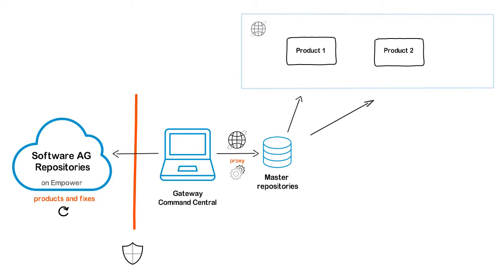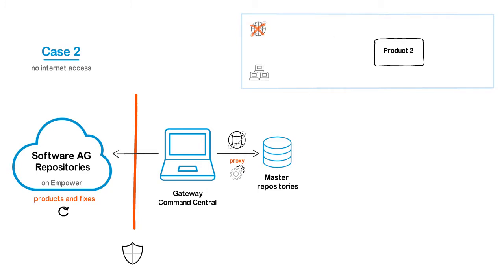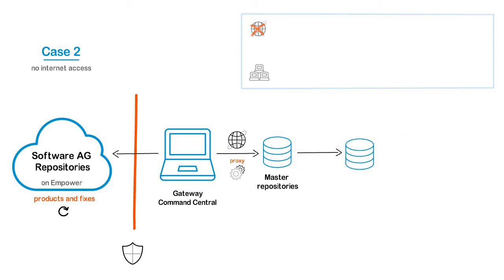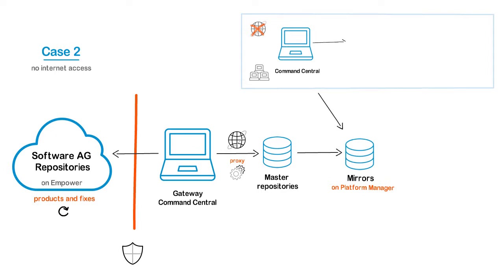Now let's consider Case 2: what to do when your network has no internet access and it can only access the company intranet. In this case, you cannot install products and fixes directly from the master repositories. Instead, you can use the master repositories to create mirror repositories on the local platform manager. To use the mirror repositories in the network that has no internet, you install another Command Central. From this Command Central, you access the gateway mirror repositories through the company intranet and create mirrors on the no-internet platform manager. Now you can use the mirror repositories to install products and fixes in a network without internet.